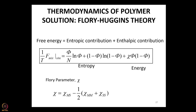If A and B — meaning the monomer and the solvent — like each other, then the chi term will be negative. If, on the other hand, the monomer and the solvent don't like each other but each likes its own kind, then chi becomes positive. So, a good solvent has chi negative and a bad solvent has chi positive.